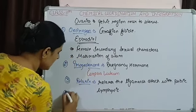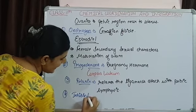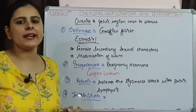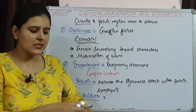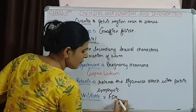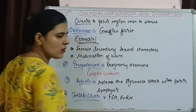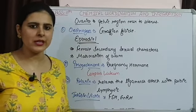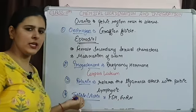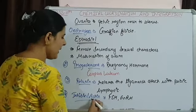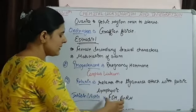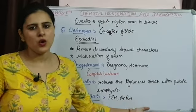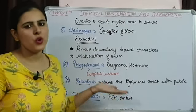The last ovarian hormones are inhibin and actin. Inhibin means inhibitor and actin means activator. Inhibin inhibits the secretion of FSH (follicle stimulating hormone) and GnRH (gonadotrophin releasing hormone), which are released by the anterior lobe of the pituitary. Actin activates the secretion of FSH and GnRH. These two hormones regulate the secretion of FSH and GnRH.